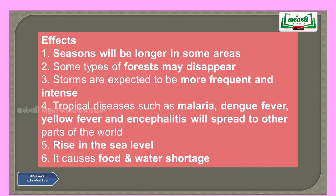The effects of global warming include longer seasons in some areas, disappearance of some types of forests, more frequent and intense storms, and tropical diseases such as malaria, dengue fever, yellow fever and encephalitis spreading to other parts of the world. There will also be a rise in sea level — when polar ice caps melt, they enter the sea, raising the sea level, and cities near the coast will be flooded.